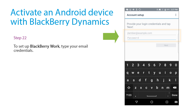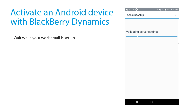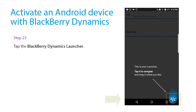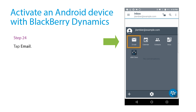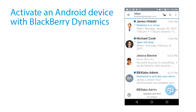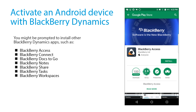To set up BlackBerry Work, type your email credentials. Wait while your work email is set up and your email messages are synchronized. Tap the BlackBerry Dynamics Launcher — you can access it from any of the BlackBerry Dynamics apps. Tap Email. That completes the device activation.